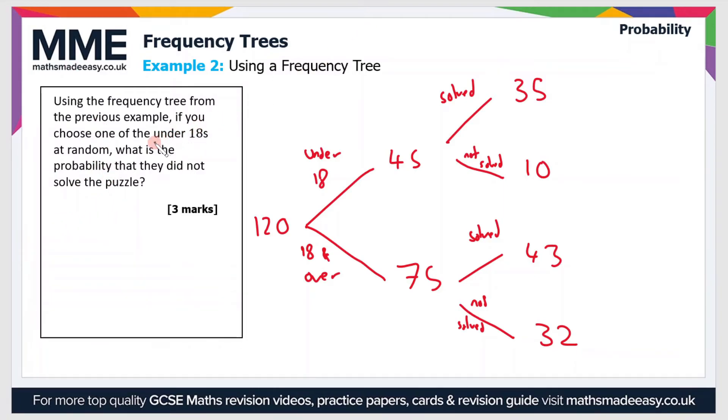Well, here we're only considering people who are under 18, so that's these top three branches here. You can see that there's a total of 45 people that are under 18, so the total is 45. What is the probability that they did not solve the puzzle? Well, 10 of the 45 people didn't solve the puzzle, so the probability is 10 over 45. If you cancel that down, you can divide both by 5, that gives you 2 ninths.